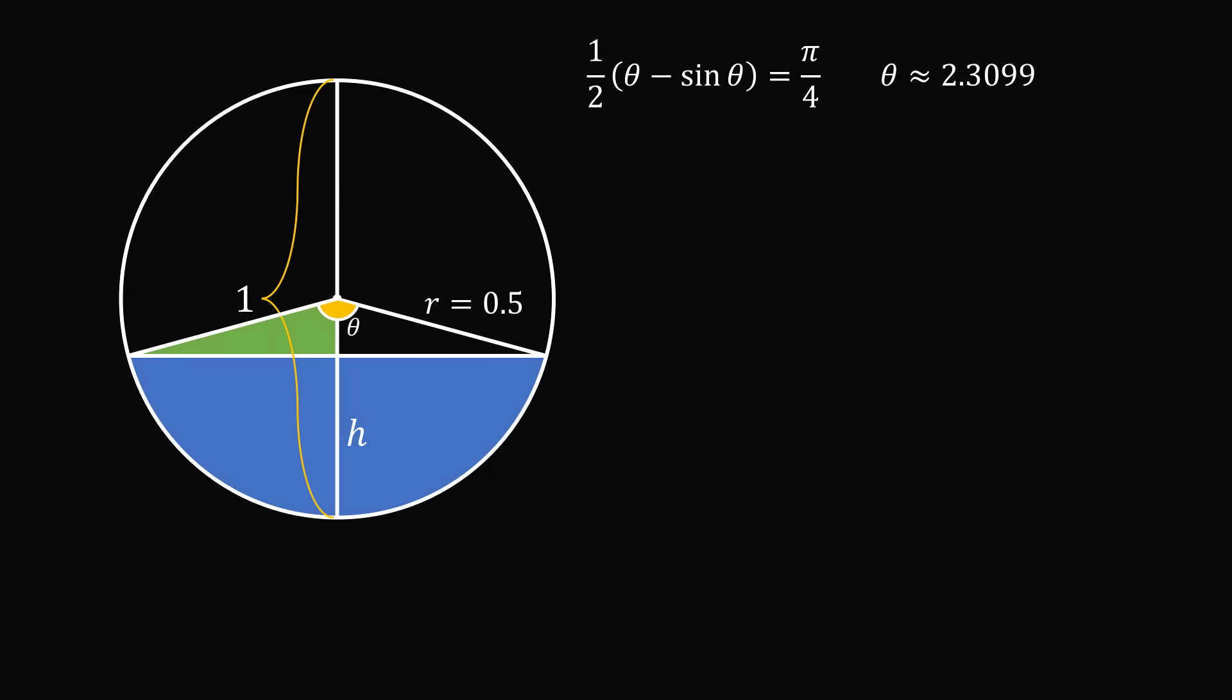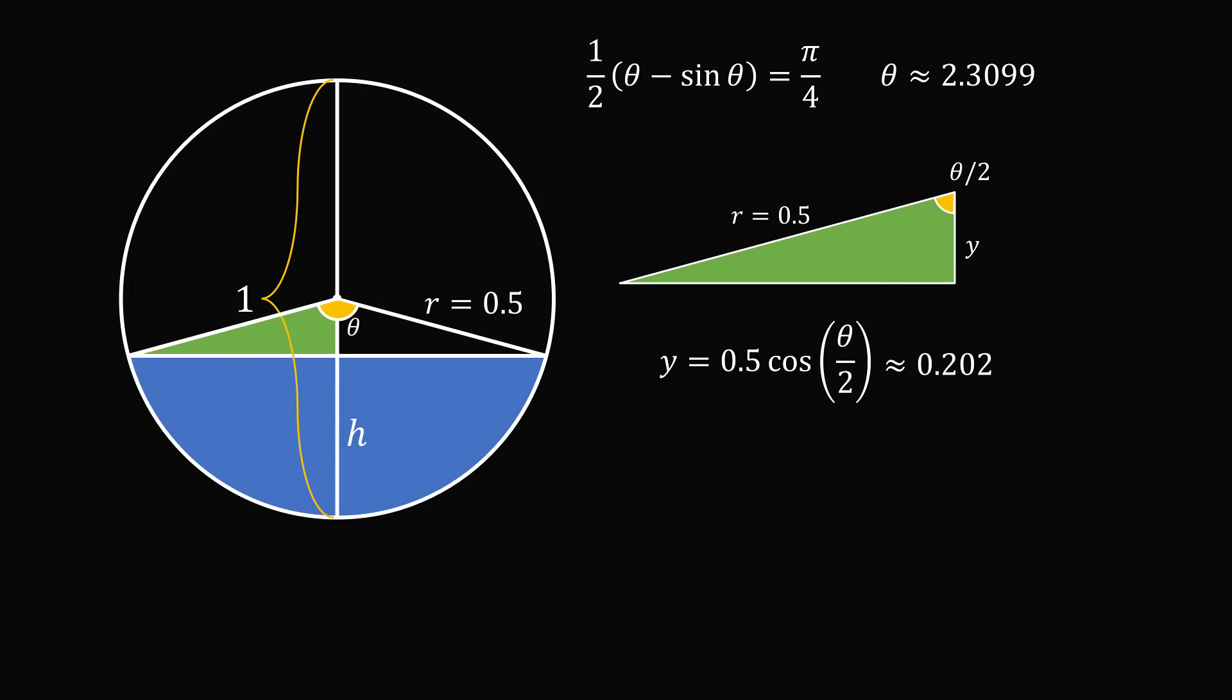Let's now proceed by focusing on this right triangle. Let me magnify the dimensions. The hypotenuse is equal to the radius. Then, this angle will be half of the central angle theta, so it's equal to theta over 2. Let's label this vertical length as equal to y. We can solve for the length of y. It will be equal to 0.5 cosine of theta over 2. Substituting in the approximate value for theta, we can get an approximate value for y as 0.202.